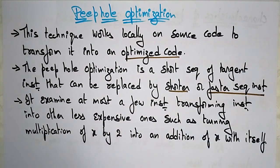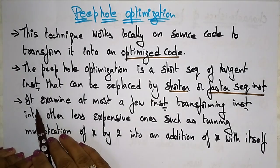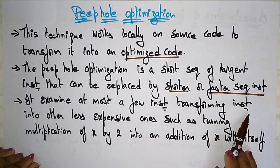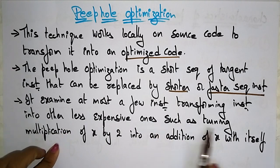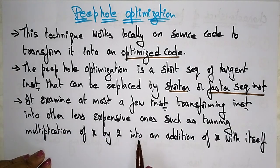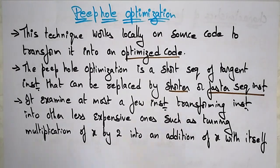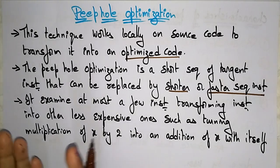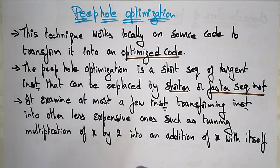Peephole optimization is mainly concentrated on shorter and faster sequence instructions. It examines at most a few instructions, transforming them into other less expensive ones — such as turning multiplication of x by 2 into an addition of x with itself. The main aim is to reduce the instructions without changing the effect of the expression.